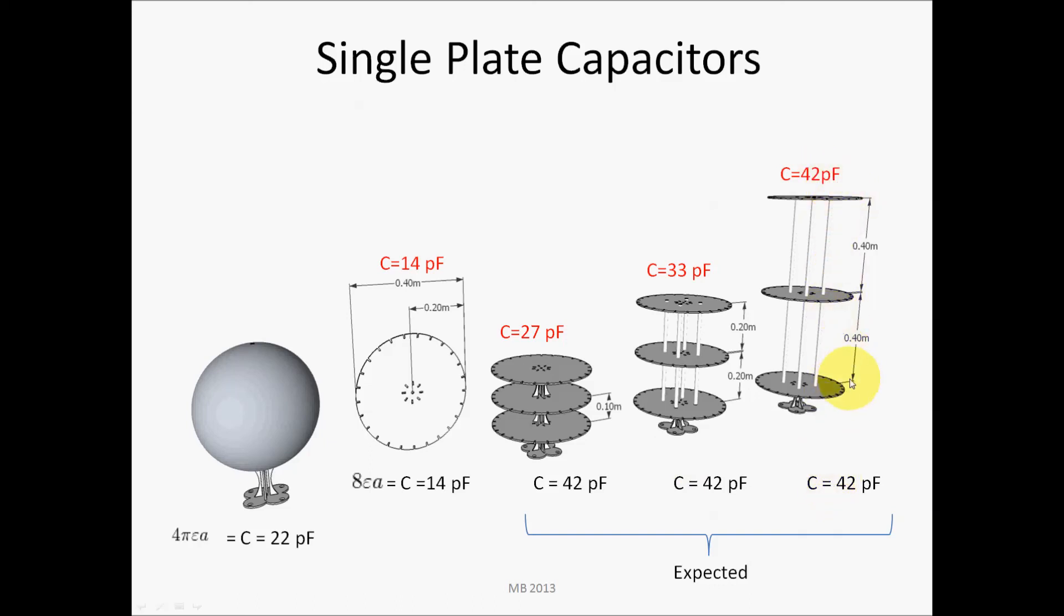And then I finally achieved the 42 picofarads that I expected in my calculations by spacing them exactly one diameter, 0.4 meter in distance from each plate. So with a distance spacing between the plates equal to 0.4 meter, the fields no longer cancelled and interfered with one another, so I had my 42 picofarad capacitance value.